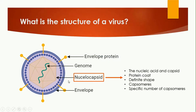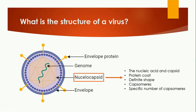The second part of the virus structure is the nucleocapsid. Nucleocapsid means nucleic acid plus capsid. The capsid is the outer boundary and the nucleic acid is the DNA, so together they form the nucleocapsid. It is a protein coat that provides a definite shape to the virus. The capsid is made up of capsomeres, which are protein units that combine to form the capsid. The number of capsomeres is specific and can be used to identify different types of viruses.